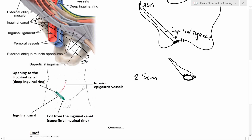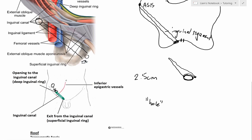The deep inguinal ring, while we call it a hole, is more of a deficiency. The transversalis fascia sits along here, and as the testes move down and push into it, that pushing through creates the hole. We'll discuss this more in the next video. Essentially, the deep ring is where the transversalis fascia gets pushed into the canal to line the rest of it.